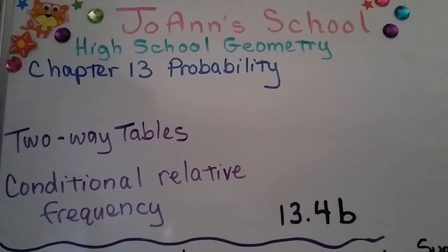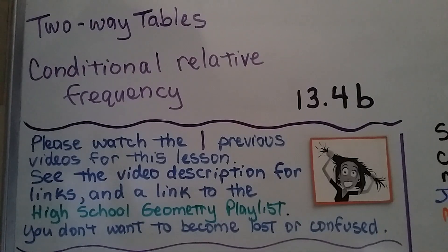Two-way tables, conditional relative frequency. We're at 13.4b. If you missed the first part of this lesson, 13.4a, there's a link in the description, and we talked about two-way tables and joint and marginal relative frequency.